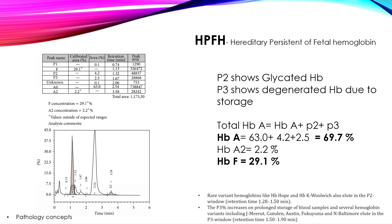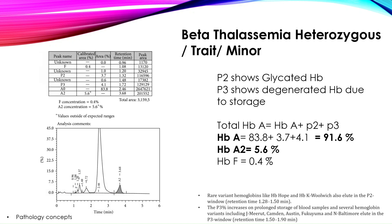Next is HPFH — hereditary persistence of fetal hemoglobin. Here HbA is 69.7%, HbA2 is 2.2%, and HbF is 29.1%. In HPFH, HbF is usually less than 50%.